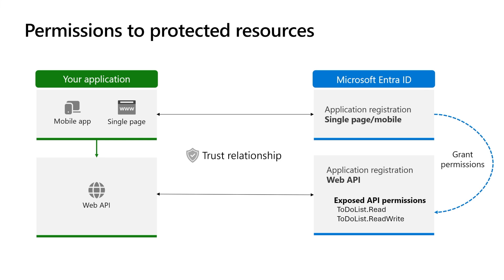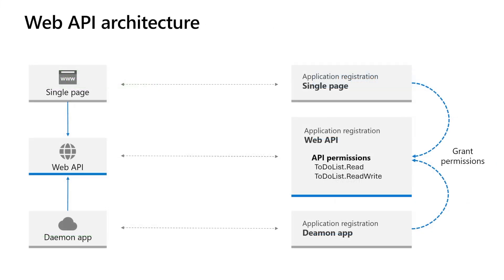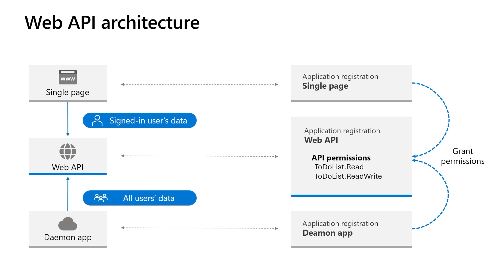Subsequently, assign these permissions to your web, single page, or mobile application, enabling it to access the web API on behalf of the user currently logged in. All kinds of applications, including daemon applications, can call the same web API. While interactive applications like web, single page, or mobile apps operate on behalf of a user, non-interactive applications like daemon apps function on their own behalf. In this diagram, the single page application invokes the web API to access the signed-in user's data like the user's profile, while the daemon application runs in the background and invokes the same web API to access all users' data.